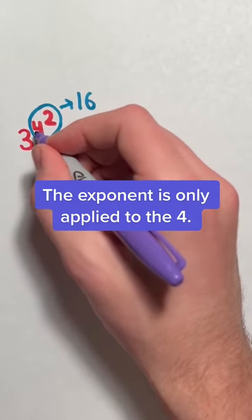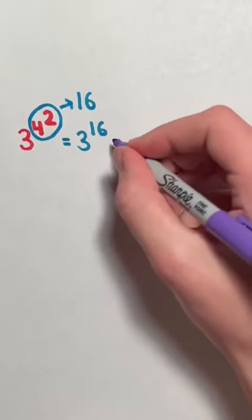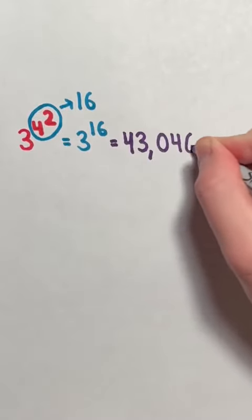The exponent is only applied to the 4. Then you can do 3 to the power of 16, which is 43,046,721.